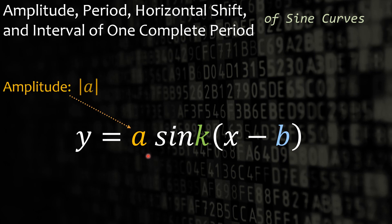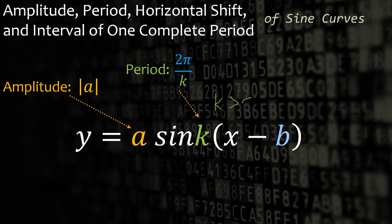The amplitude is the absolute value of a. Amplitude is the length or the distance of the particular wave or curve. The period is 2 pi over k, where this k is any real number greater than zero. Take note of that.